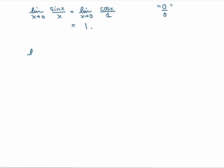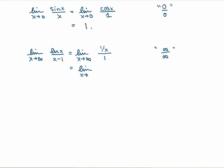Let me do two more examples. Suppose that I have the limit as x goes to infinity of log of x over x minus 1. First, is it indeterminate? The numerator as x goes to infinity is infinite, and the denominator is also infinite. So I get a limit of type infinity over infinity — I can use L'Hôpital's rule. The derivative of log of x is 1 over x, and the derivative of x minus 1 is 1. So I get the limit as x goes to infinity of 1 over x, which is just 0. So the first case I got 1, the second case I got 0. These indeterminate forms can give 0, 1, plus or minus infinity — you don't know, you just have to evaluate the limit.